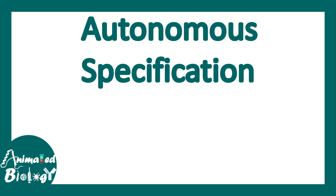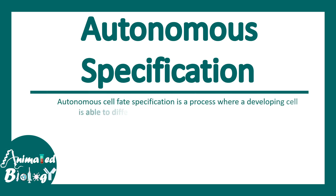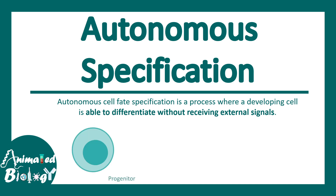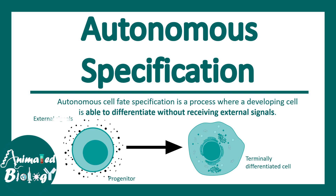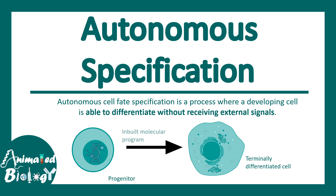In this video we'll talk about autonomous specification. Autonomous cell-fate specification is a process where a developing cell is able to differentiate without any external signal, as if the cell knows what it has to become in future. It's kind of like a self-drive — it doesn't need any external influence. It's an inbuilt molecular program that is driving the cell's fate into its terminally differentiated stage.